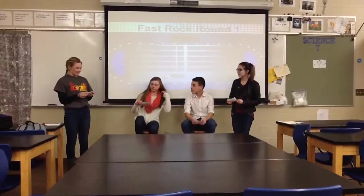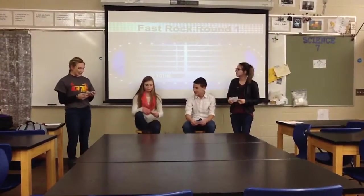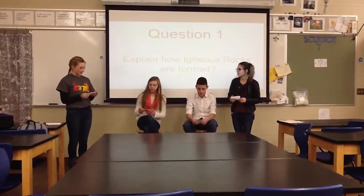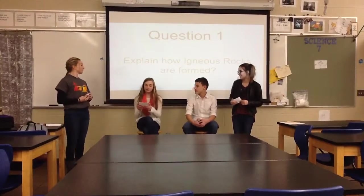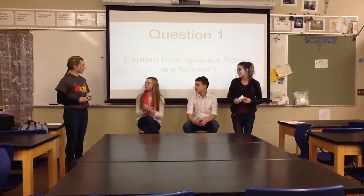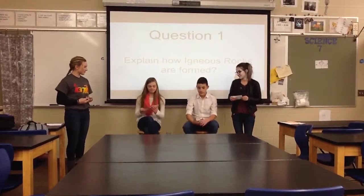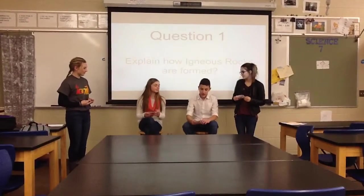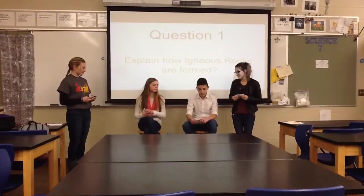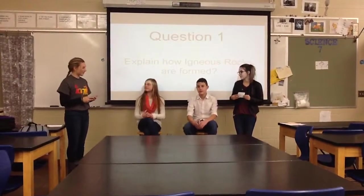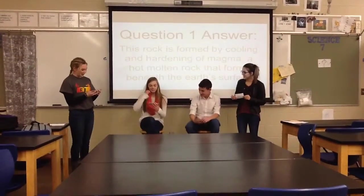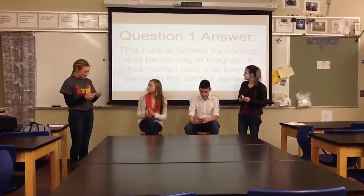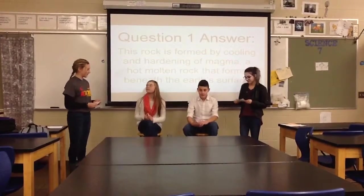Our first question for today: Question 1 — Explain how igneous rocks are formed. Contestant 1 answered: This rock is formed by the cooling and hardening of magma, a hot molten rock that forms beneath the earth's surface. Contestant 2 answered: Igneous rocks are formed by melting of magma. Contestant 1 is right — this rock is formed by the cooling and hardening of magma, a hot molten rock that forms beneath the earth's surface.